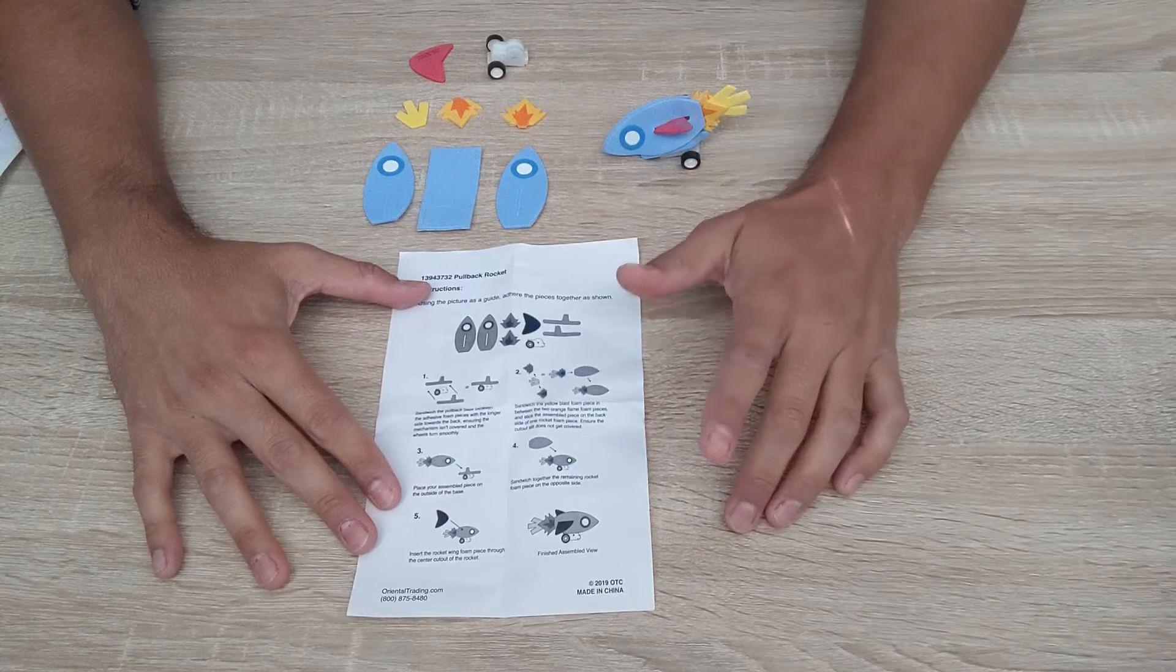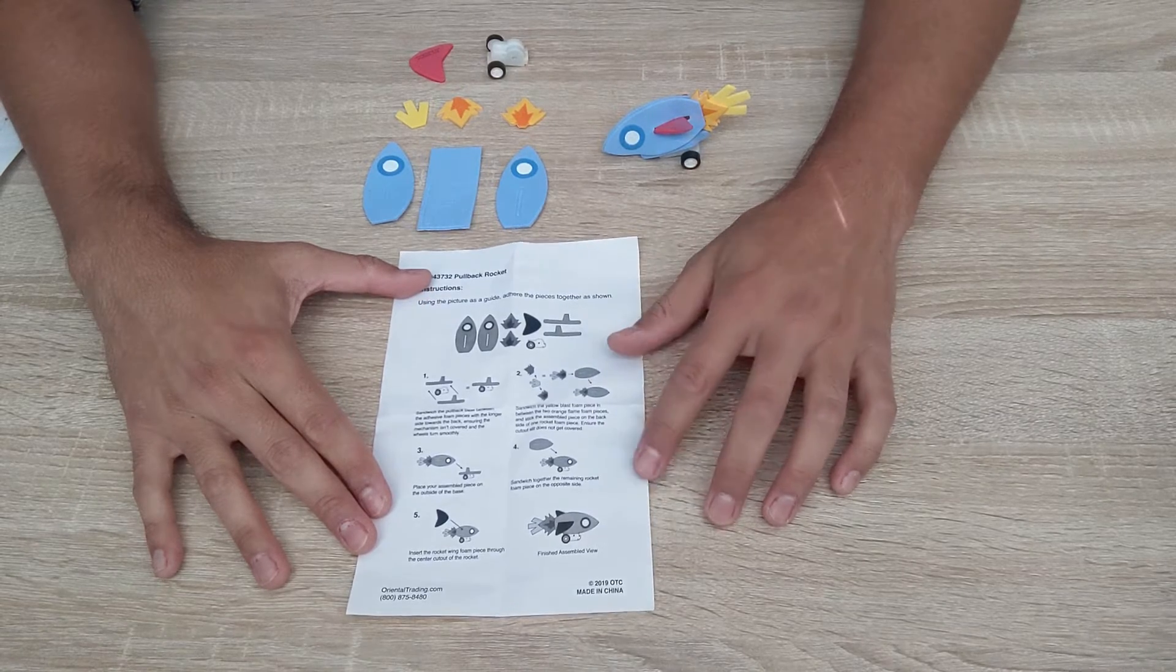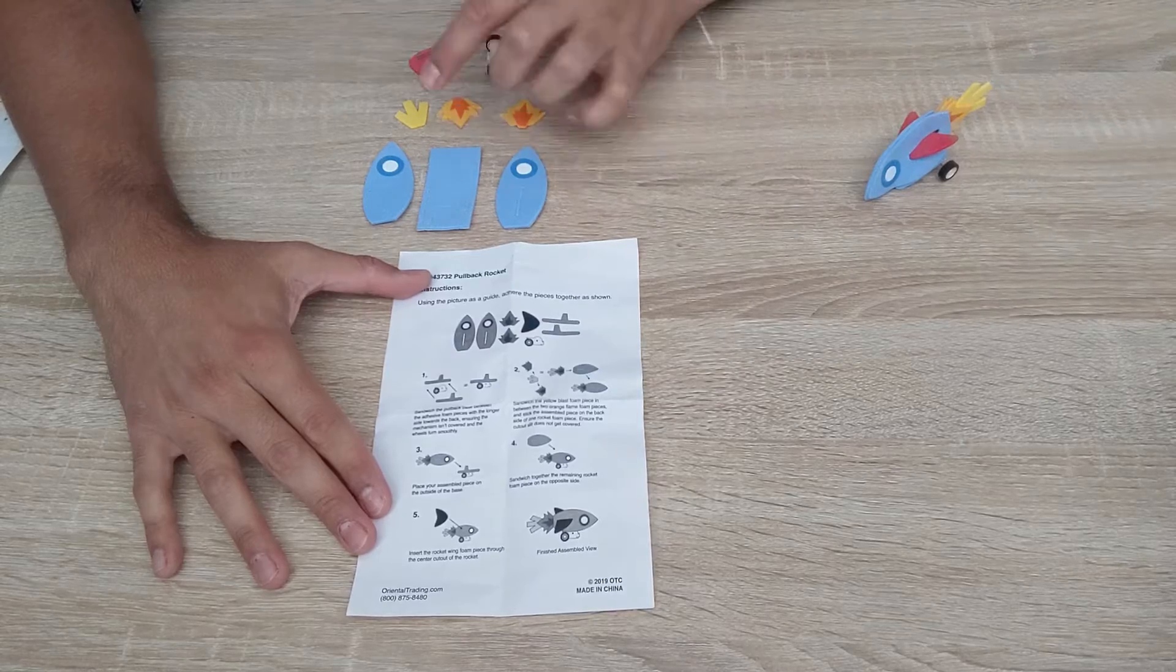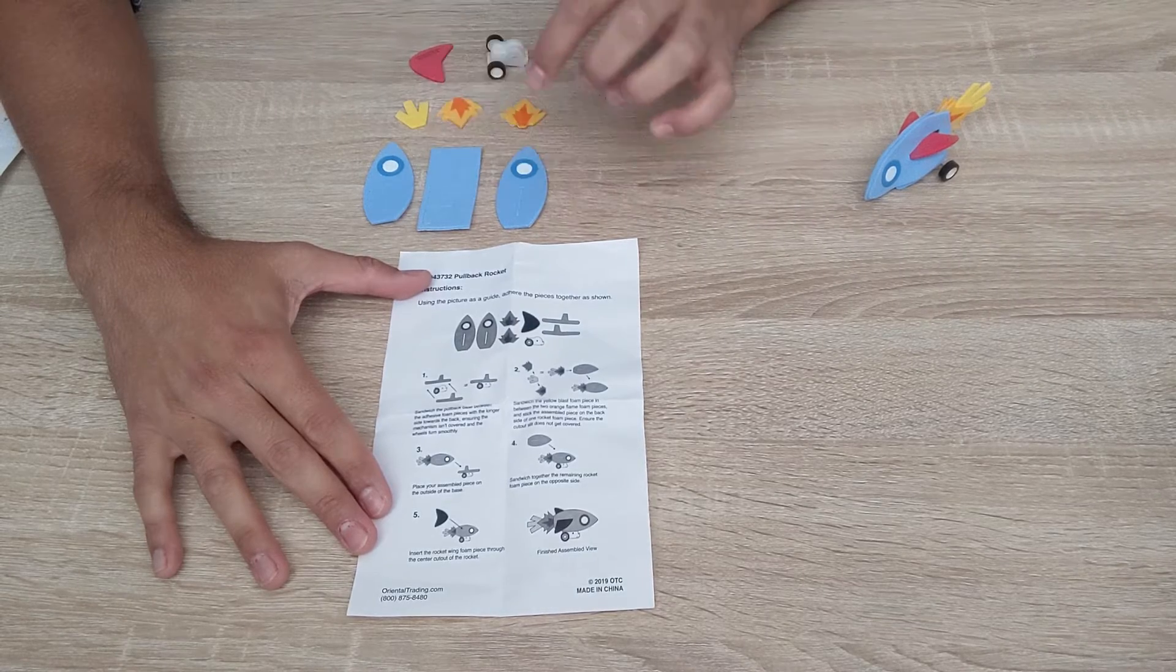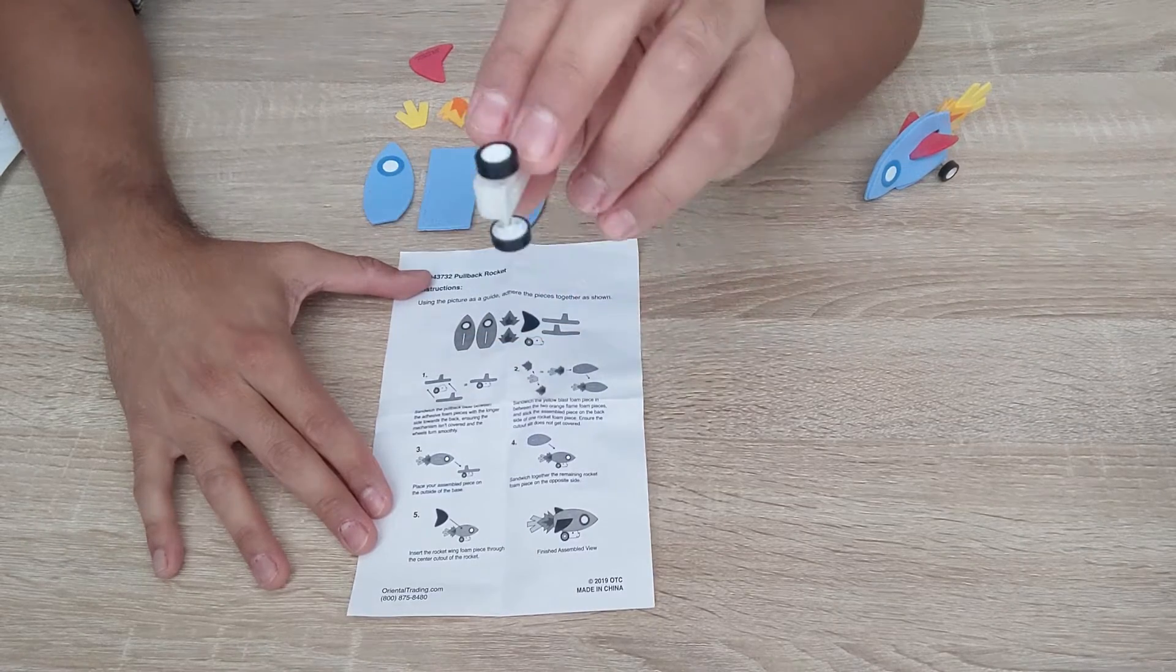So in your Club on the Go bag, you're going to find all the supplies you need to make this rocket. You're going to find the instructions and then you're going to find the pieces of foam. And again, you should have seven pieces of foam. And then make sure that you also have the little car mechanism.